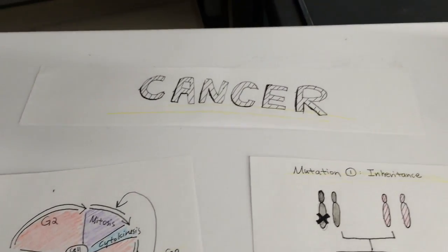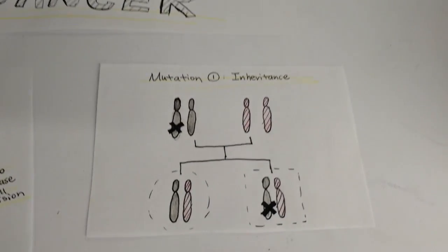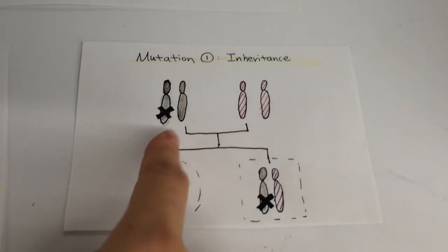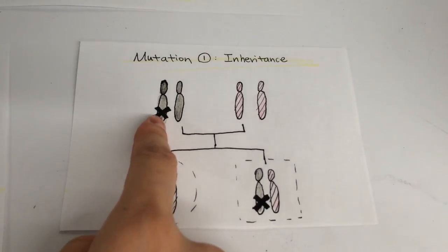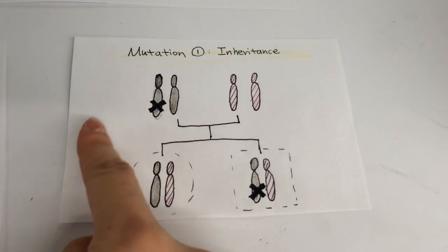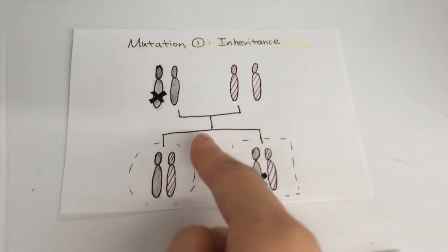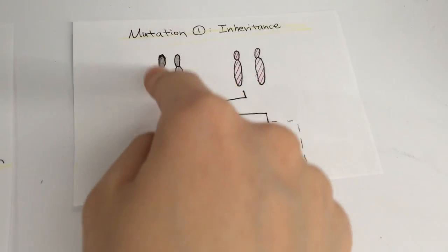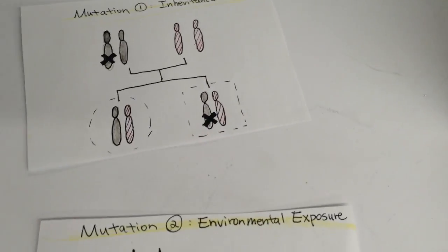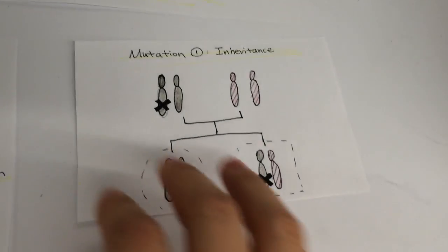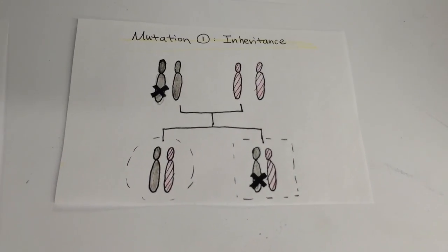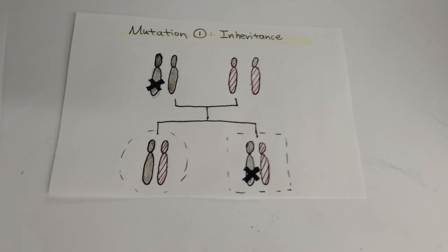There are three major ways. First, mutations can be inherited from one's parents. When the sperm or egg cells of parents contain erroneous genes, the error gets passed down to the offspring. In this situation, all of the cells in the person's body would have the same mutation since the DNA of all of the cells of this person were replicated from the parent cells that already contained errors.